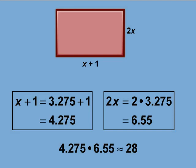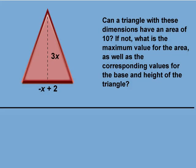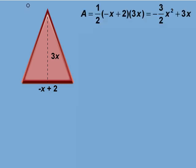Let's look at a final example. Can a triangle with these dimensions have an area of 10? If not, what is the maximum value for the area, as well as the corresponding values for the base and height of the triangle? We know the area of a triangle is one-half the base times the height. Substituting the base and height expressions, we get this equation for the area. We need to determine if this equation can equal 10.